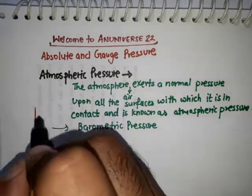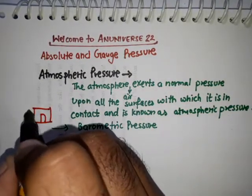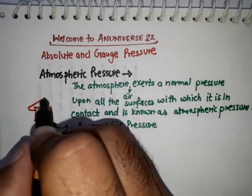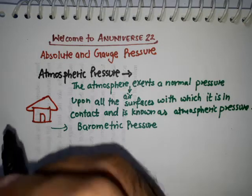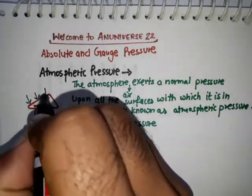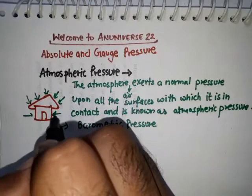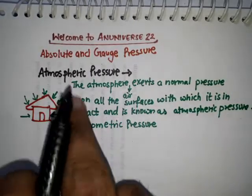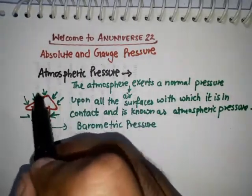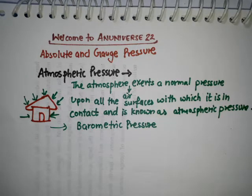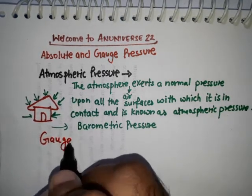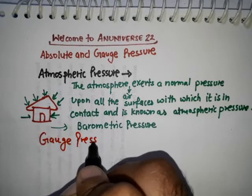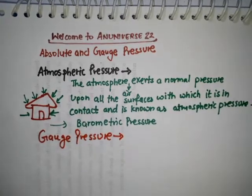For example, we have a house — a simple small house. The pressure that is exerted by the air on all its surfaces is the atmospheric pressure. This is the atmospheric pressure that is acting on this house.